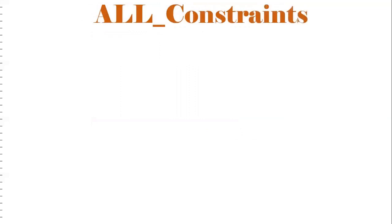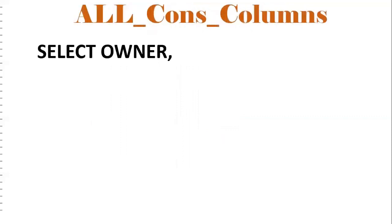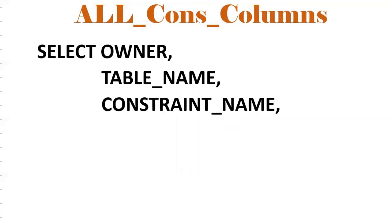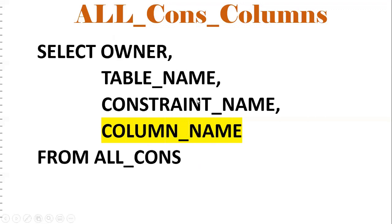To find constraints, use ALL_CONSTRAINTS. Additionally, ALL_CONS_COLUMNS gives owner, table name, constraint name, and the column on which the constraint is created — so you can figure out which column has which constraint.